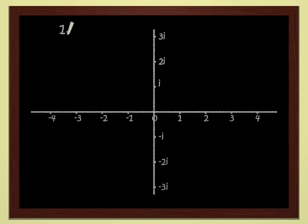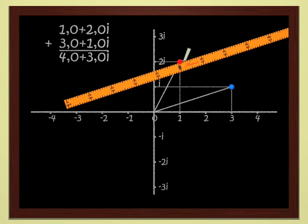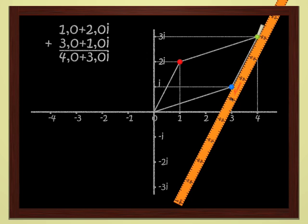Points in the plane become numbers in their own right. These numbers can be added, just like usual numbers. Look at the red point, which is the point 1 plus 2i. Let's add 3 plus i, which is the blue point. Well, you add them just as school children do. That gives us 4 plus 3i. Geometrically, this is just addition of vectors. You see that it's no problem to add complex numbers.